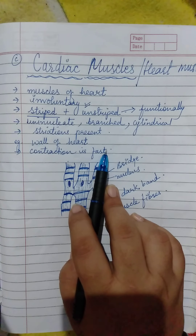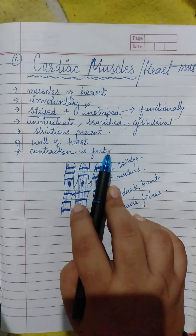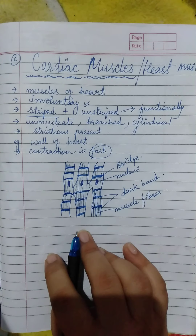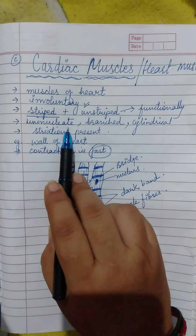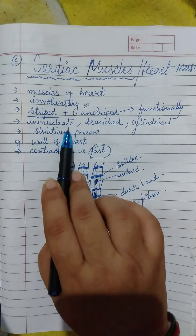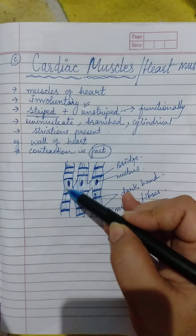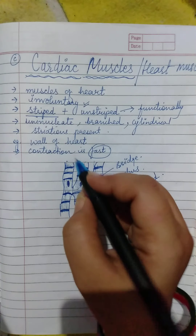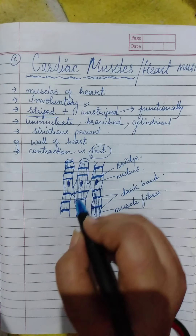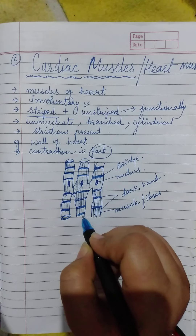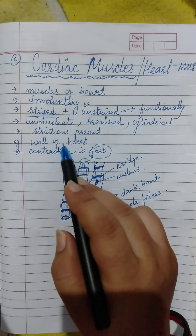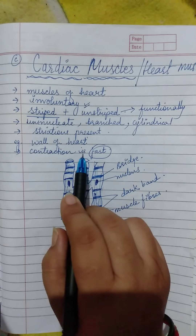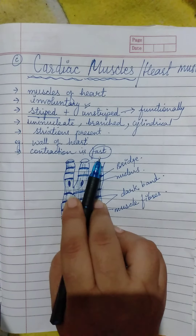There is a certain limit to contraction and relaxation, but the contraction and relaxation is very fast. You can see in the diagram — these are cylindrical muscles.